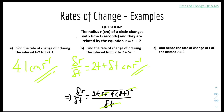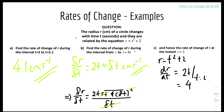For part C, find the rate of change of R at the instant where T equals 2. We have R equals T squared plus 2, so differentiating gives dR over dT equals 2T. When T equals 2, dR over dT equals 4. That means the rate of change of R with respect to T at the instant T equals 2 is 4 cm per second.